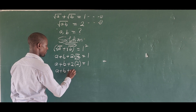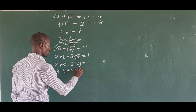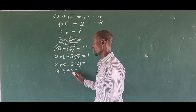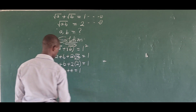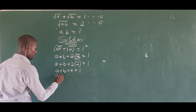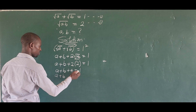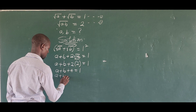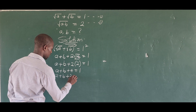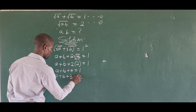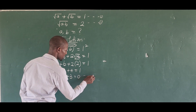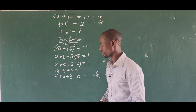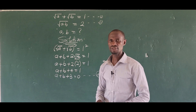That gives us a plus b plus four equal to one. We move the four to the other side of the equation, giving us a plus b minus four plus one, which simplifies to a plus b plus three equal to zero. Let's call this equation three.